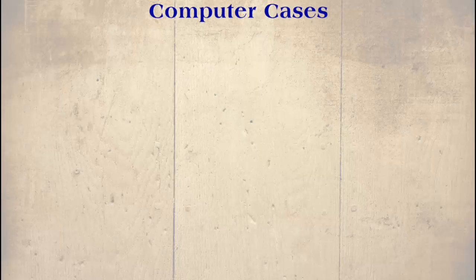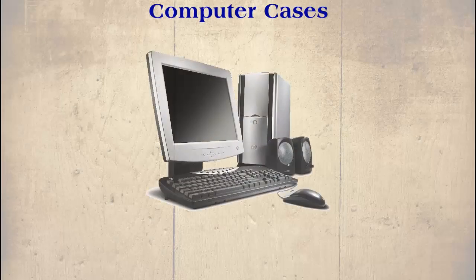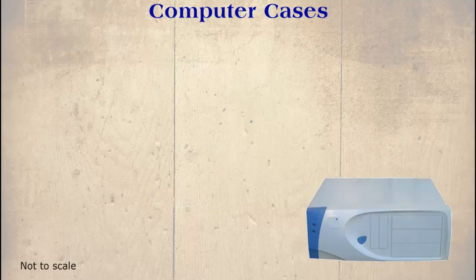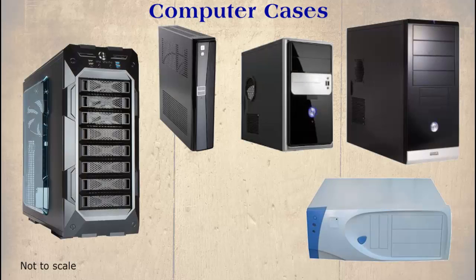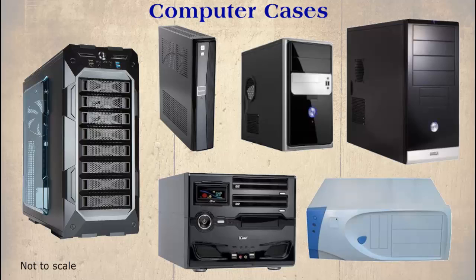Most users will be familiar with a computer case, as this along with the monitor, keyboard and mouse is usually visible in a typical setup. There are many different types of computer cases. The main types are desktop, slimline, mini tower, midi tower, full tower and cube. Why do we need so many different shapes, sizes and colours? The two main reasons are functionality, since some of these cases can only be used in certain circumstances, and the other is fashion.